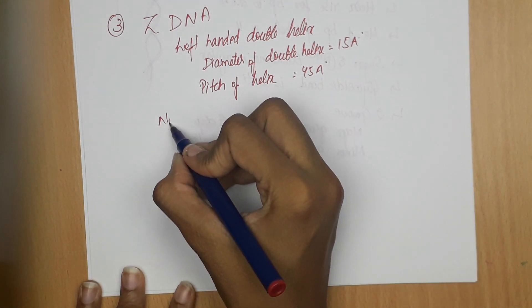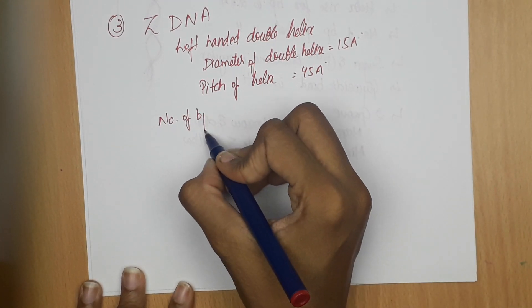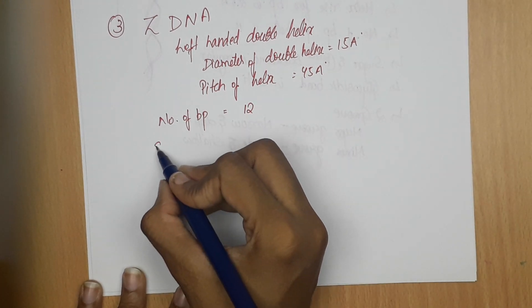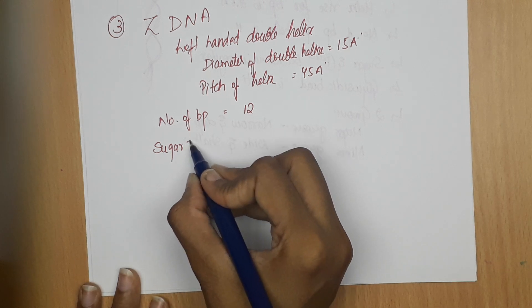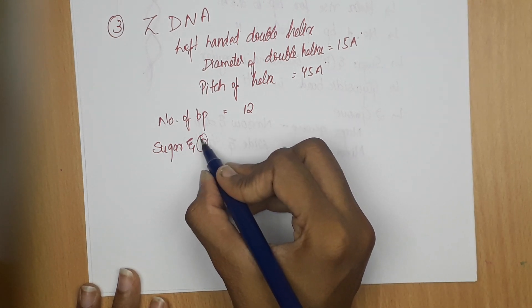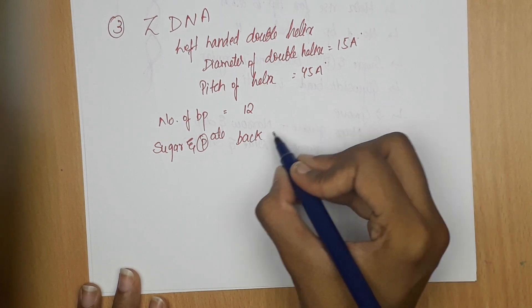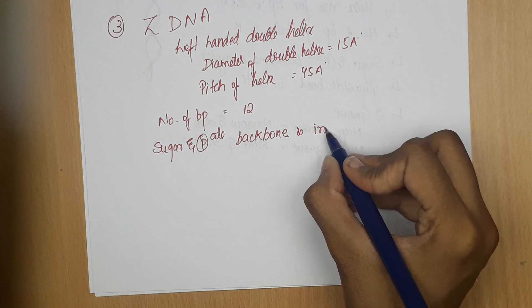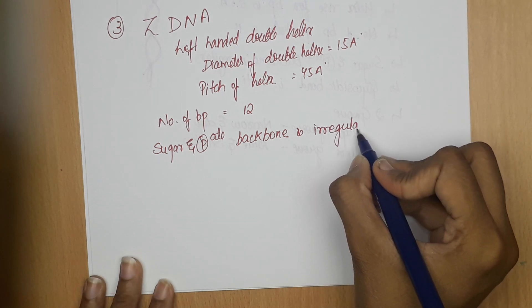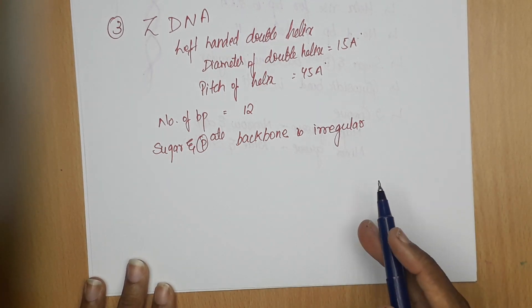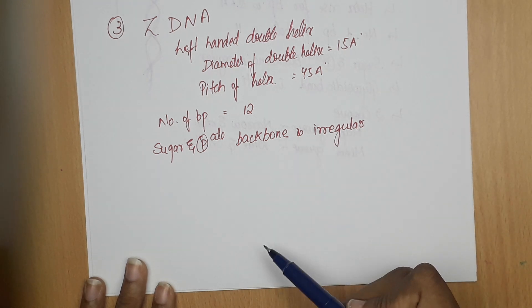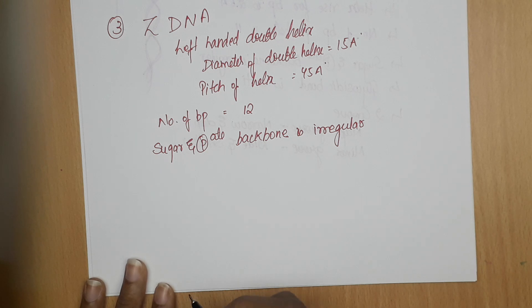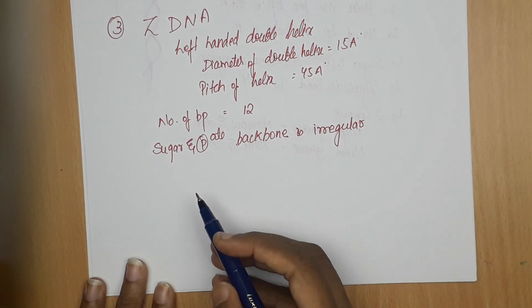The number of base pairs per helix in Z-DNA is 12. The sugar and phosphate backbone is irregular — in A-DNA and B-DNA they have a regular backbone, but in Z-DNA the sugar and phosphate backbone is irregular.